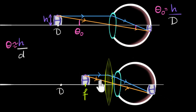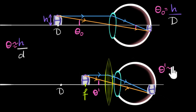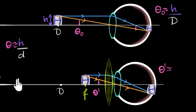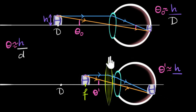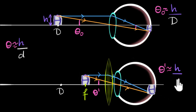So what is this new angle theta_dash going to be? It's bigger than theta_0. Using the same formula, theta_dash ≈ h/f, where f is the focal length of the magnifying lens. Since the lenses are thin, we can neglect the thickness, so this distance is pretty much the focal length f.